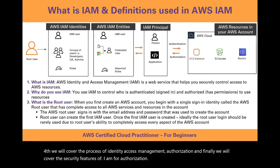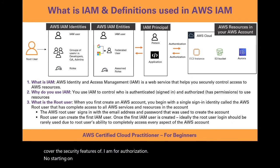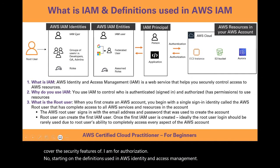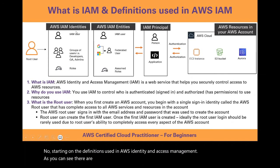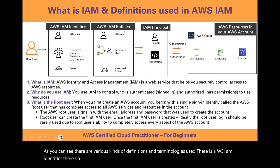Starting on the definitions used in AWS Identity and Access Management, there are various kinds of definitions and terminologies used. First, there is AWS IAM identities, there is AWS IAM entities, there is an IAM principal, and finally, AWS resources in your AWS account.